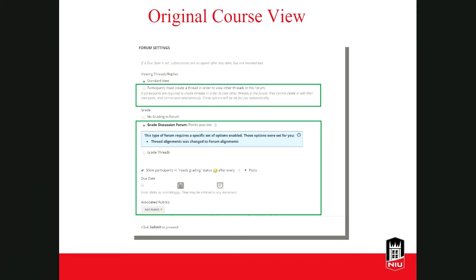You can also set up grading for the discussion forum. You can assign points, set a due date, and associate a grading rubric or create one by clicking Add Rubric. If you plan to have the same participation requirements for all of your discussions, you may want to consider creating a grading rubric and associating it with all of your discussion forums — that will help expedite the grading process. I'll be showing you an example of a basic discussion rubric that I use for my classes later on in the session.